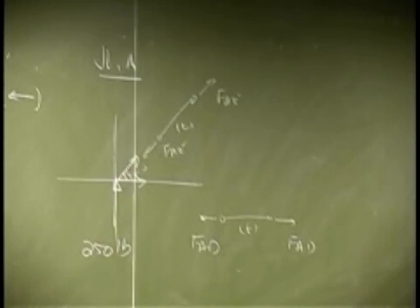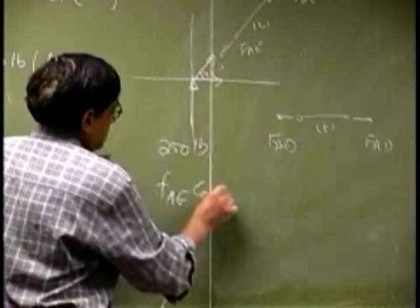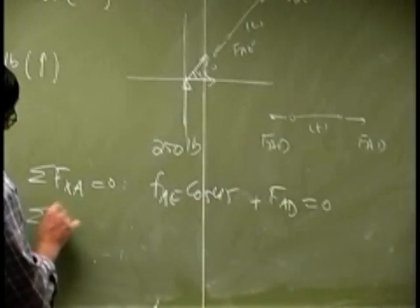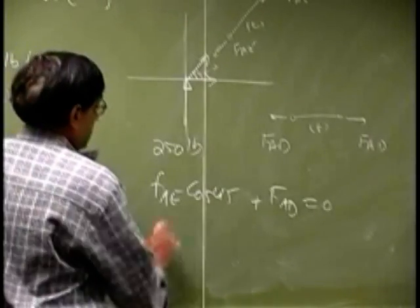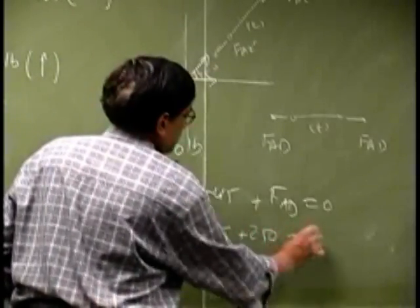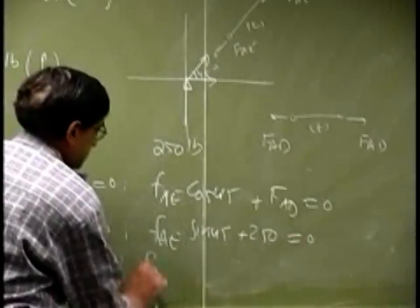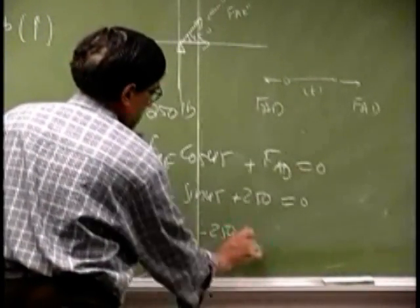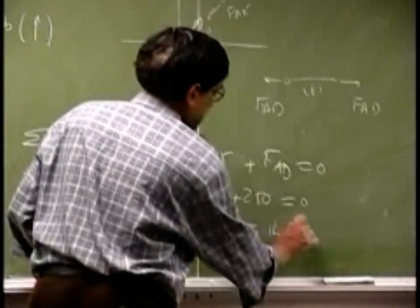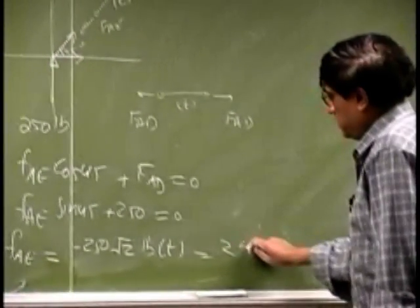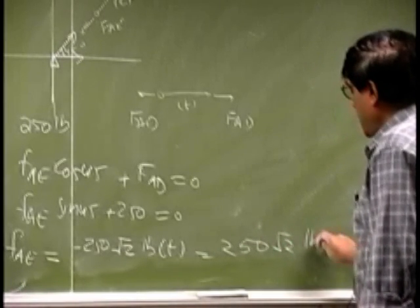So, again we go through summing force at A in the X, it gives you FAE cosine 45 plus FAD goes to 0. We sum the force in the y direction at the same joint, you get FAE sine 45 plus 250, that goes to 0. So, from the second equation, you are going to get FAE as negative 250 multiplied by square root 2 pounds in tension. So, the actual force in that member is going to be 250 square root 2 pounds in compression.